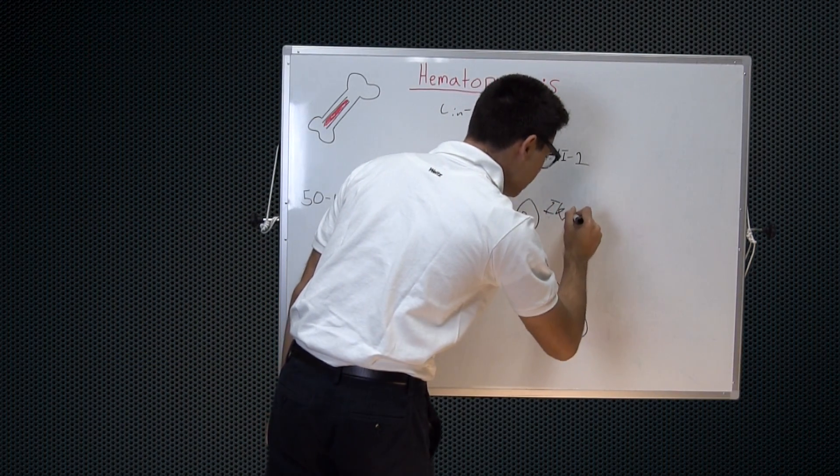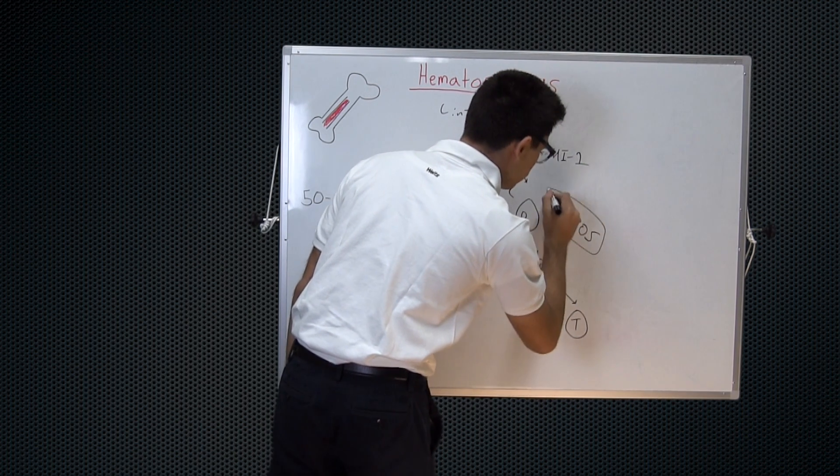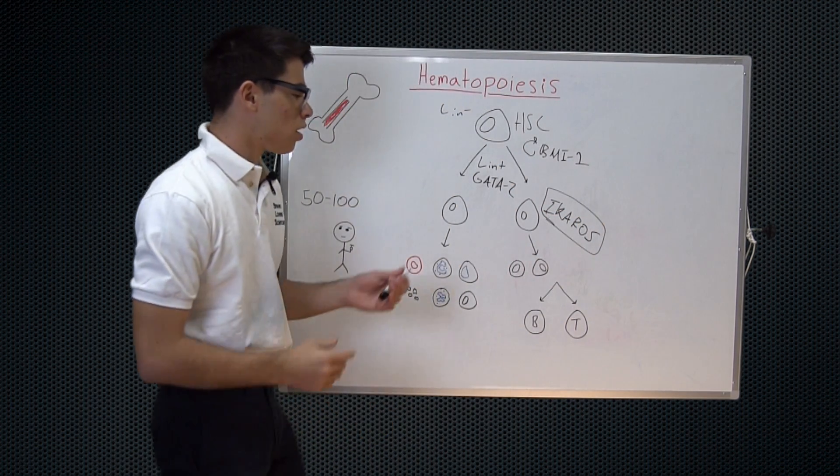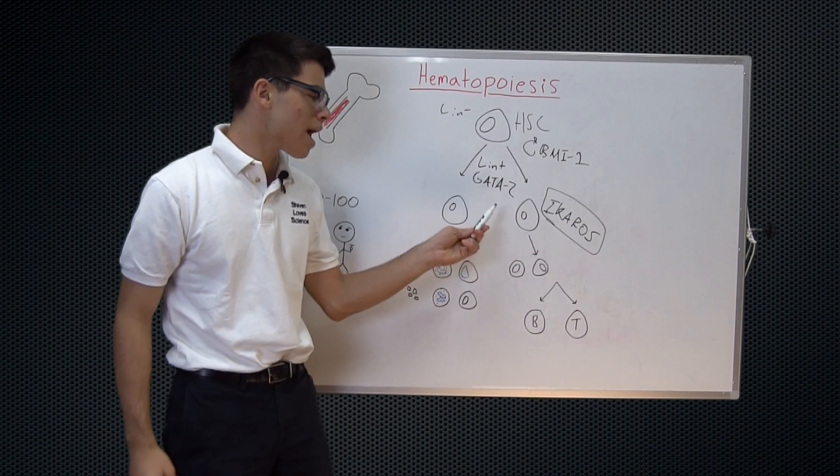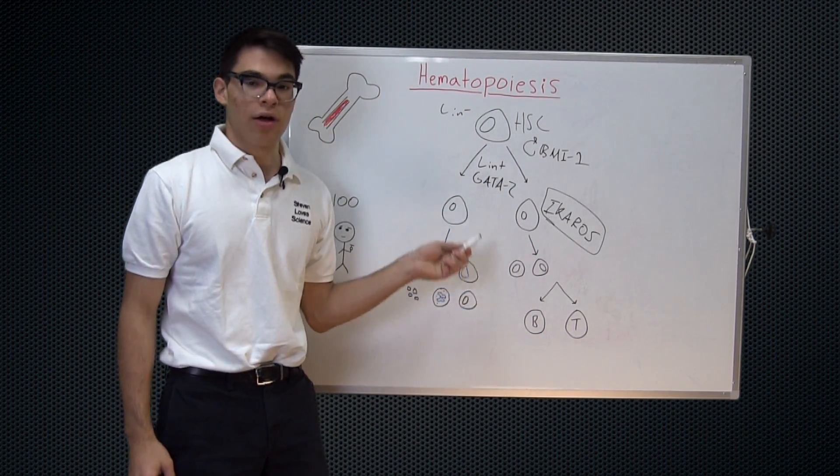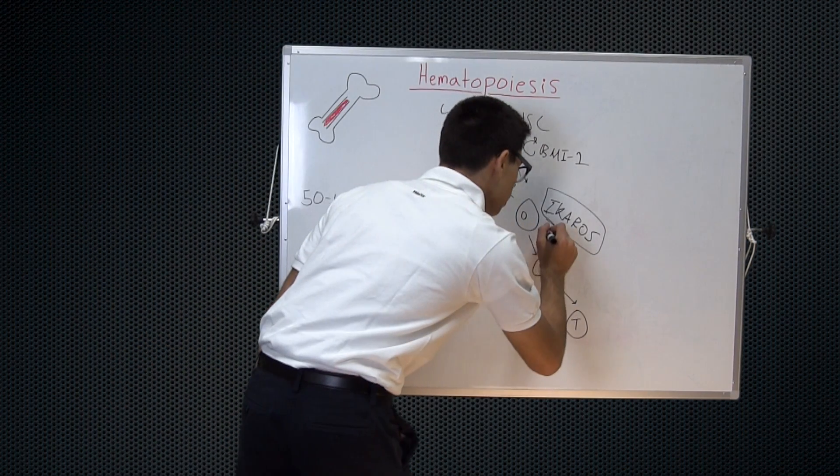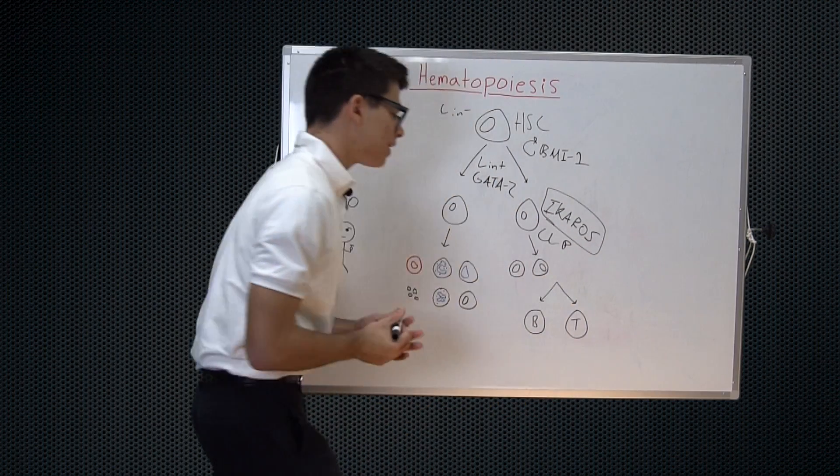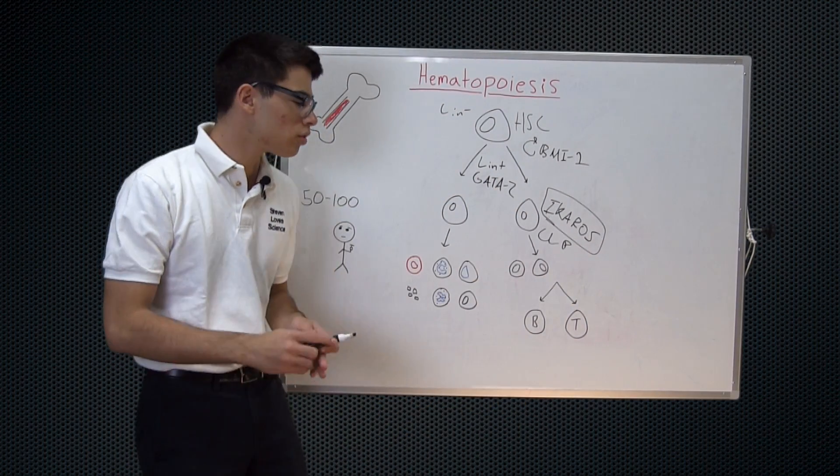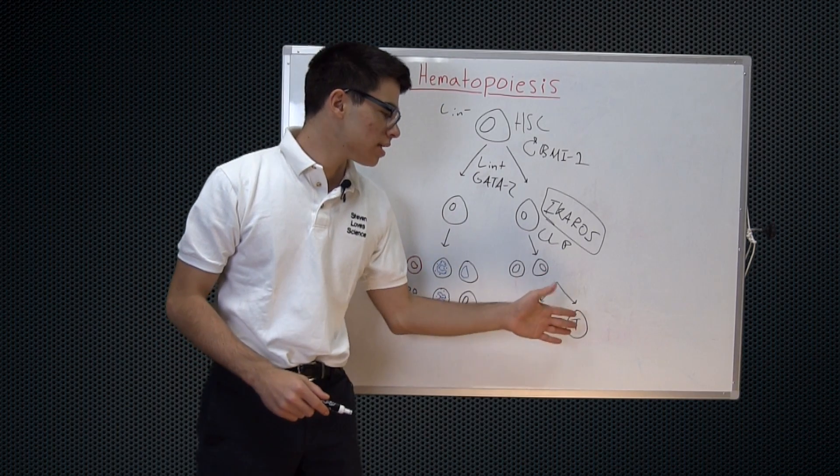And this is really completely dominated by transcription factors, so I just want to discuss a few of the major ones that play the largest roles. So we see the transcription factor Icarus, and now we have a cell that can become any lymphoid cell. And this is called the common lymphoid progenitor, which we can abbreviate CLP. And the common lymphoid progenitor can become a dendritic cell, it can become an NK cell, or become a B or T cell.